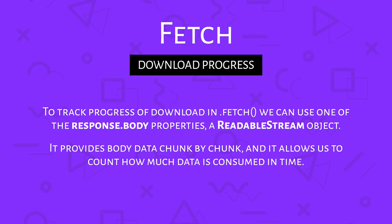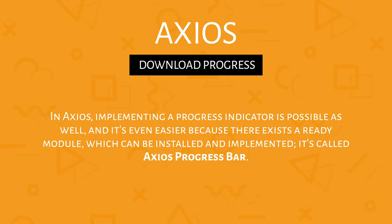The next feature to compare is download progress. When downloading a large amount of data, we want some way to check how much data has already been downloaded — like a progress bar. Earlier, developers used XMLHTTPRequest and an onProgress callback. In Fetch, we can use the ReadableStream property of the response body, which provides data chunk by chunk and lets us count how much data is consumed over time. With Axios, implementing a progress indicator is even easier because there is an existing module called Axios Progress Bar that we can install and use.